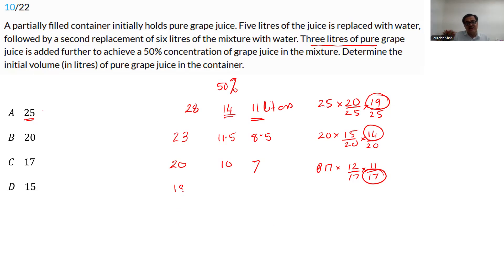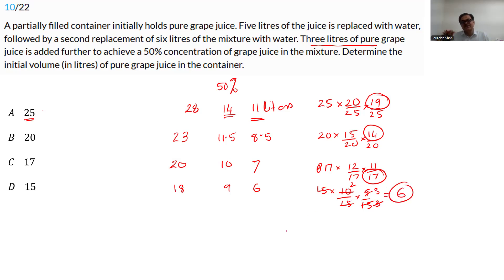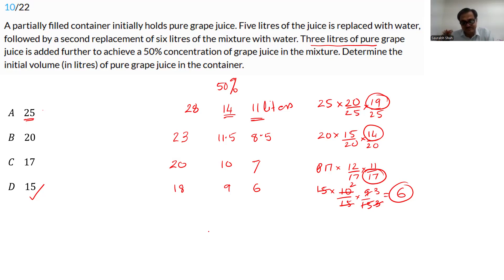Verifying 15 liters: final = 18 liters, 50% = 9 liters; subtract 3, need 6 liters after replacement. Check: 15 liters, remove 5 → 10/15, remove 6 → 9/15 = 6/10... simplifying: (10/15) × (9/15) gives 6 liters. The 6 liters checks out — add 3 liters to get 9, which is half of 18. The answer is 15 liters, the last option.